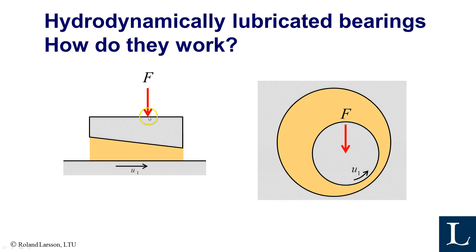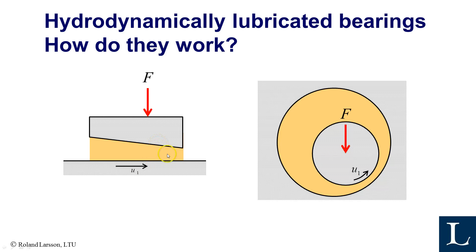There is a load applied here, the same for the journal bearing. Typically there is a motion of one surface — in this case the lower flat surface — while in the journal bearing it's the journal that is rotating. We will discuss good bearing operation: it means that we have a good oil film carrying the load, separating the surfaces and avoiding any contact, meaning that we don't get any wear and very low friction. So how do we get that and how does it work?